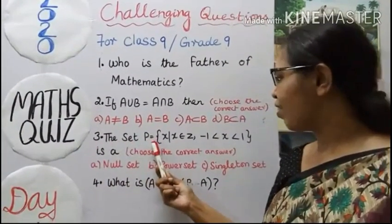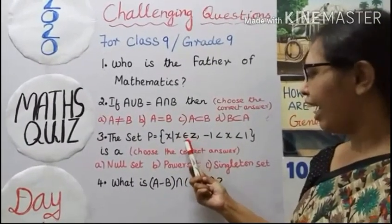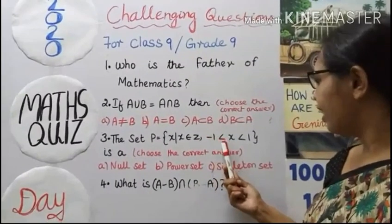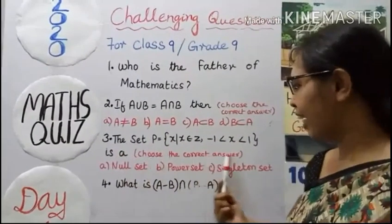The set P equals X such that X belongs to Z, that is, X belongs to integers, minus 1 less than X less than 1, is a, choose the correct answer.